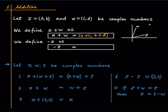We define minus Z as the complex number obtained by taking the negatives of the individual coordinates. So if this is Z, then minus Z is the reflection of Z about the origin. Now let us look at some properties of this addition.